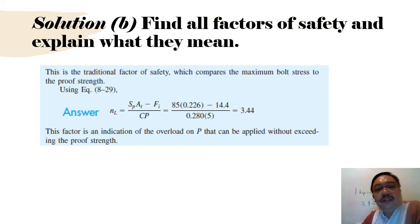Let's continue solution B. Find all factors of safety and explain what they mean. This is the traditional factor of safety which compares maximum bolt stress to proof strength. The answer is factor of safety np equals this. You can trace back where you get 85, where you get 0.0266, 40.4. You trace back from this video or from the textbook itself.